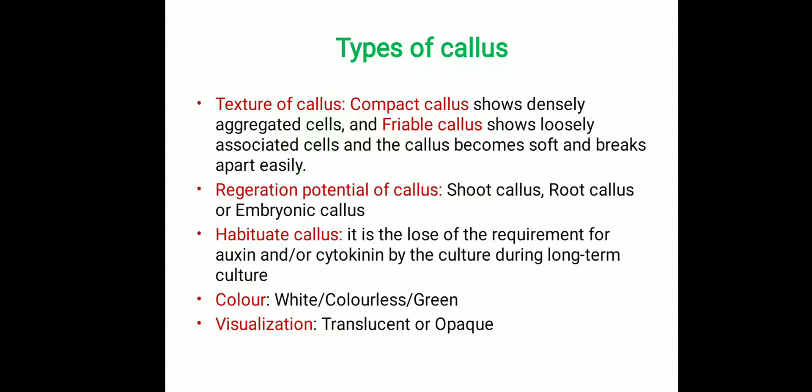Based on color, callus can be categorized into white, colorless, or sometimes green callus — green callus also appears from leaf explants. Based on visualization, we categorize into translucent callus and opaque callus. These are all the different categories classified based on the different properties of callus.